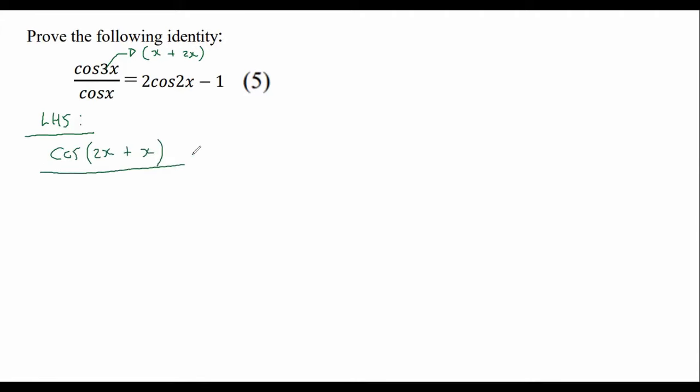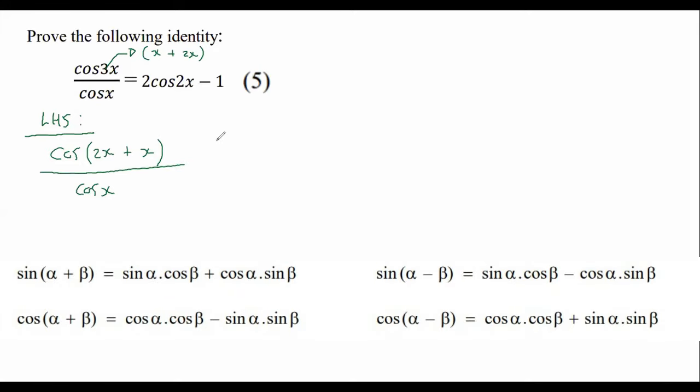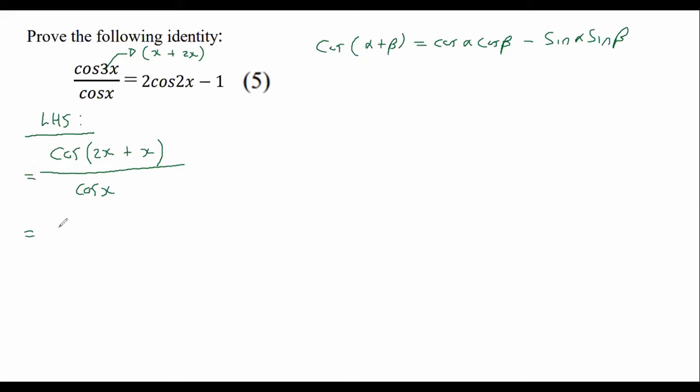So what I would then do is I would use a compound angle formula. So that would become the one on your formula sheet that has cos alpha plus beta. That becomes cos alpha cos beta minus sin alpha sin beta. And so that would end up becoming cos2x cosx minus sin2x sinx over cosx.